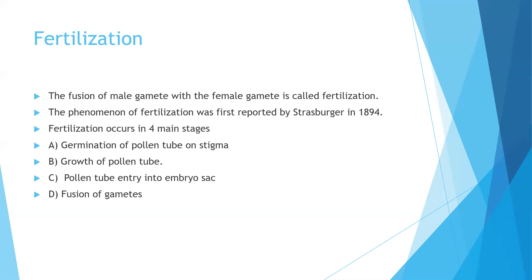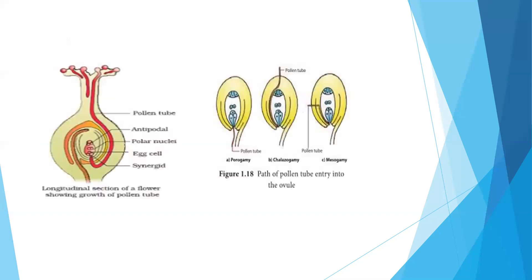When the anther matures, the anther dehisces and the pollen grains are discharged from the anther and transferred to the stigma of the flower. This process of transference of pollen grains from the anther to the stigma is called pollination. The stigma exudes some sticky substance, and due to this sticky substance the pollen grains adhere to the stigma of the flower.